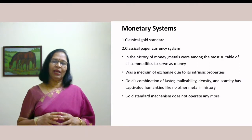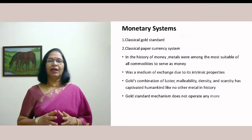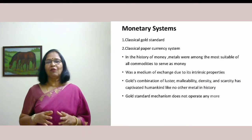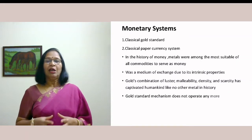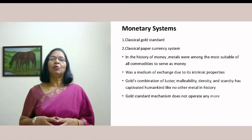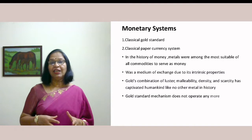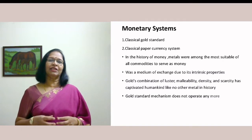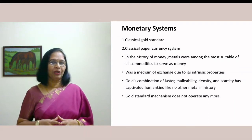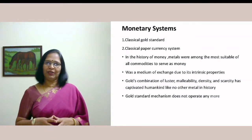When we talk about the monetary system, there are two monetary systems that have been involved in the world: the first is called the classical gold standard and the other is known as the classical paper currency system. In the history of money, metals have always held a prime place, and of all metals, gold has taken pride of place. Gold became an important money metal — it is known for its luster, malleability, density, and relative scarcity. The gold exchange standard does not operate anymore, but it can give us insight into how the exchange rate is determined between two currencies.